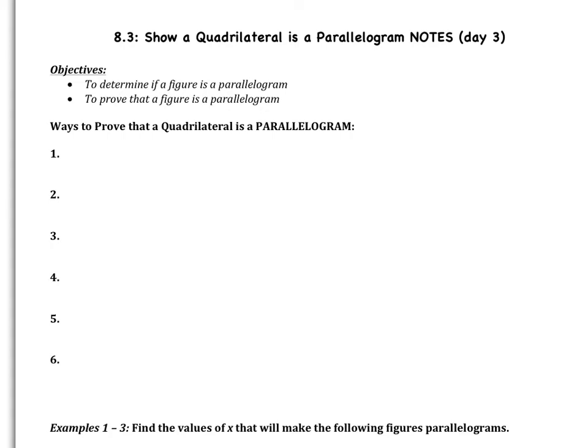Hello geometers, welcome to our third day of chapter 8, which is showing that a quadrilateral is a parallelogram. In section 2, we used the properties of parallelograms to find missing side and angle measures. Now we're going to determine if a parallelogram is a figure — yes or no — and also prove that a parallelogram is a figure. The first thing we should talk about is the ways to prove that a quadrilateral is a parallelogram, which will also help us determine if a figure is a parallelogram.